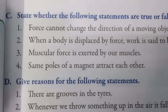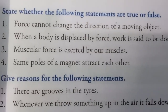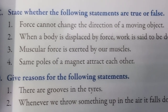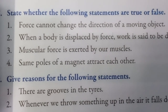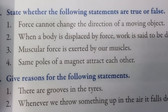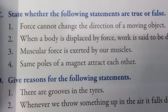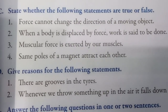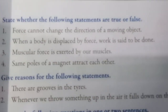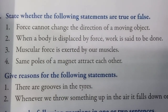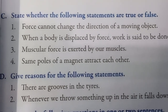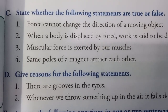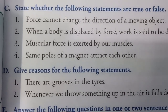Now section c: State whether the following statements are true or false. Number one — force cannot change the direction of a moving object. This is false, because force can change the direction of a moving object. Number two — when a body is displaced by force, work is said to be done. This is true. Number three — muscular force is exerted by our muscles. This is true. Number four — same poles of a magnet attract each other. This is false, because same poles of a magnet repel each other.